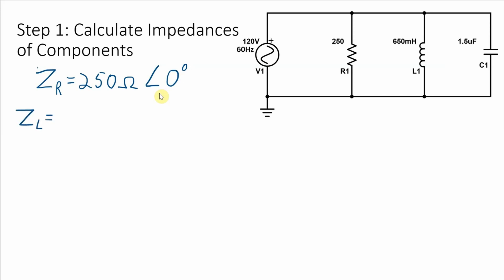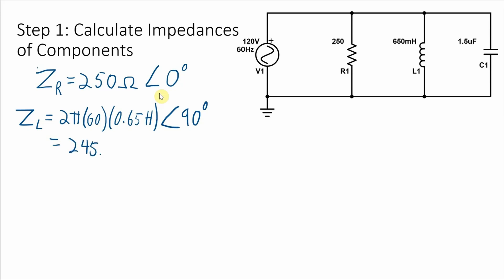The impedance of the inductor is frequency dependent. It's equal to 2π times the frequency, which is 60 hertz, times the inductance, which is 0.65 henrys. This calculation gives me the reactance, and the phase angle is 90 degrees because it's an inductor. When I plug those numbers into a calculator, I get 245.04 ohms with a phase angle of 90 degrees.